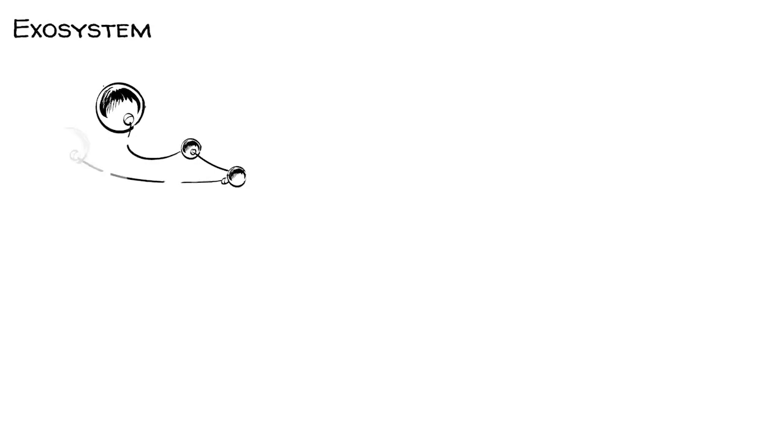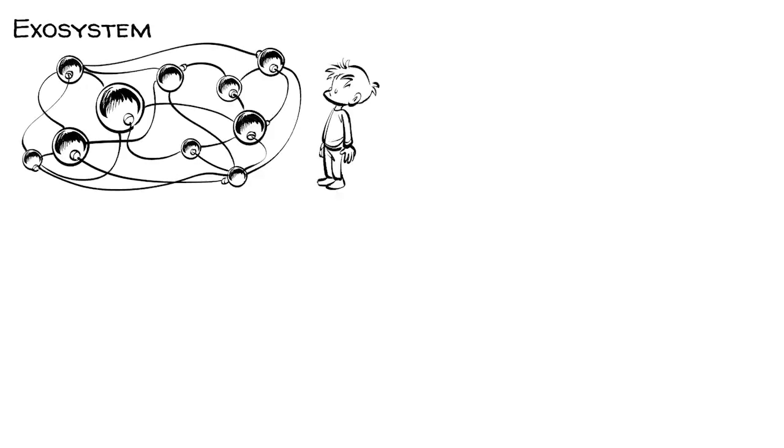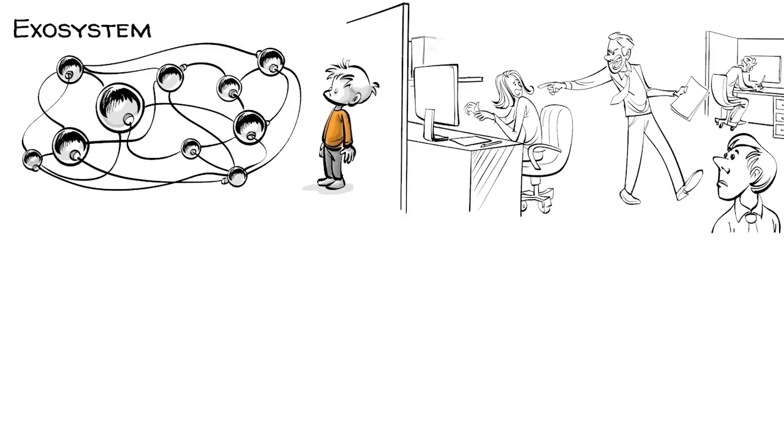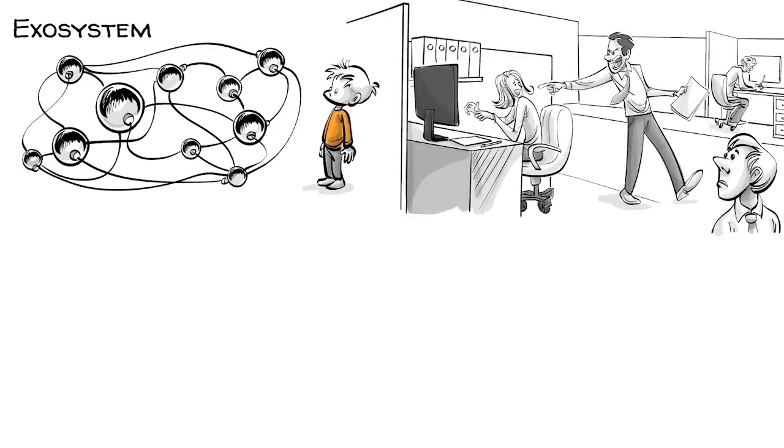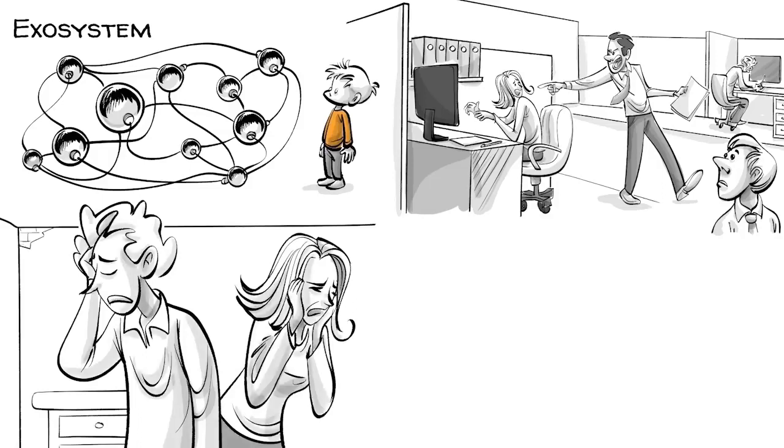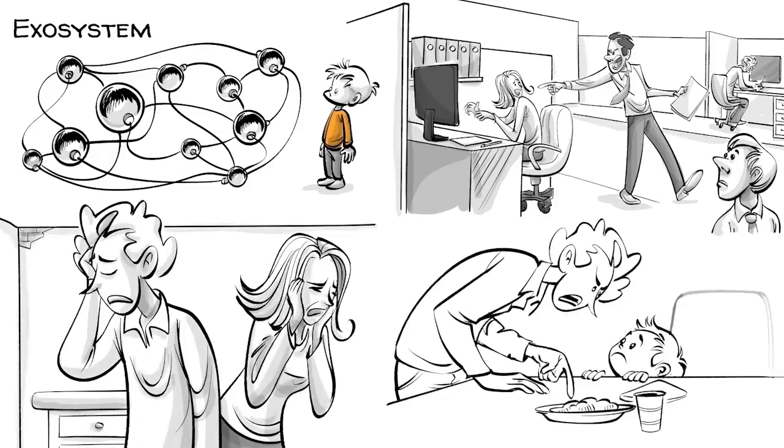The exosystem involves the links between social settings that do not involve the child. For example, a child's experience at home can be influenced by their parents' experiences at work. If the mother loses her job, there might be more arguments with the father, resulting in changes in their interaction with the child.